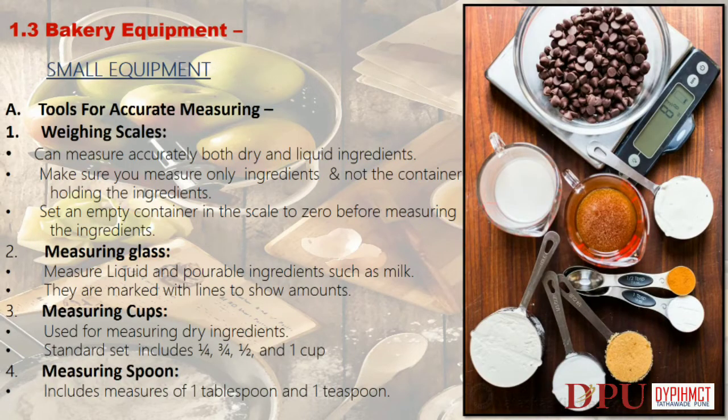1.3 Bakery Equipment — Small Equipment. Tools for accurate measuring: Weighing scales can measure accurately both dry and liquid ingredients. Make sure you measure only ingredients and not the container holding them. Set an empty container on the scale to zero before measuring the ingredients.